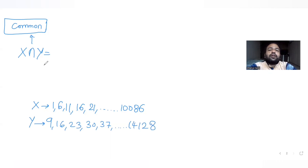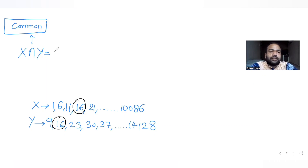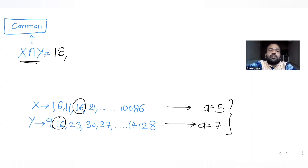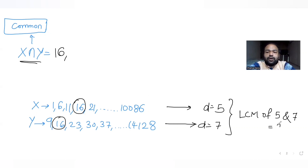When I look at the common terms in the intersection of X and Y, I can see the first common term is 16. To find the common difference between consecutive common terms, I note that set X has common difference 5 and set Y has common difference 7. So the common difference in the intersection list is the LCM of 5 and 7, which is 35.